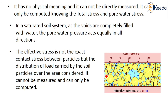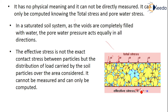Total stress is denoted by sigma (σ), and effective stress is denoted by sigma dash (σ'). Effective stress cannot be directly measured — it can only be computed knowing the total stress and the pore water pressure, using the relation σ' = σ − u. In a saturated soil system where voids are completely filled with water, pore water pressure acts equally in all directions.